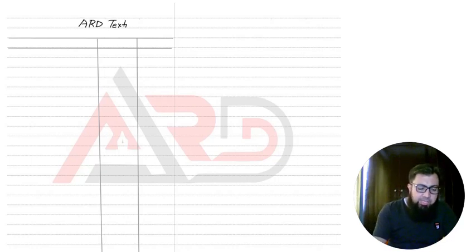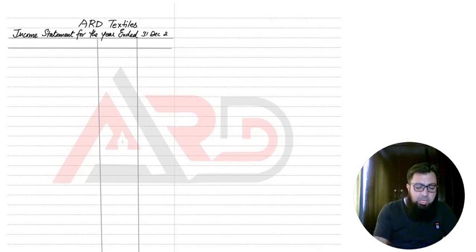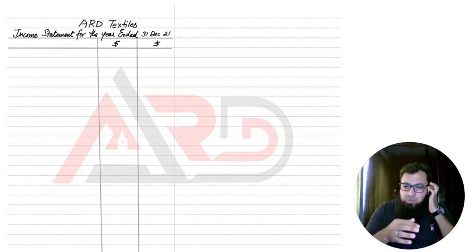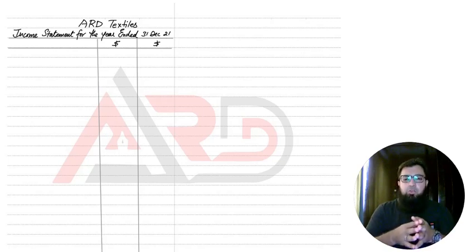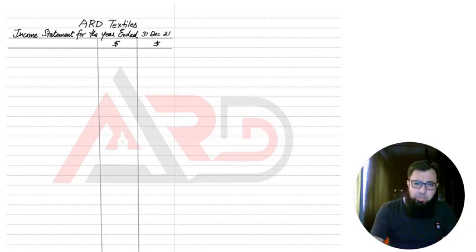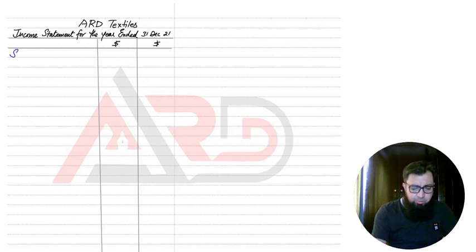Now let us start with the headings. Headings are normally given in an examination question: the name of the business and income statement for the year ended. Basically, the income statement is quite the same as we used to prepare when making a final account for a sole trader — that is, a single owner or trader business. Most of the income statement is the same. First of all, we get started with sales.